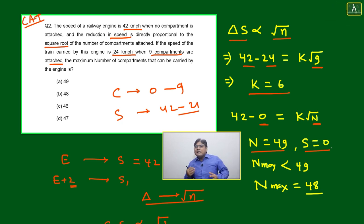But if n equals 49, the train will stop. S will become 0. If it is stopped, what is the meaning of maximum bogies? The train is not able to carry - the train is not able to carry.